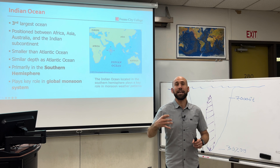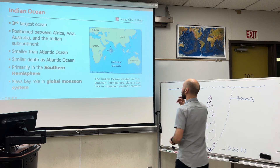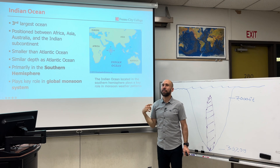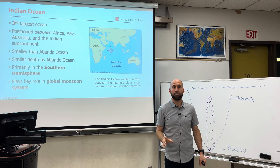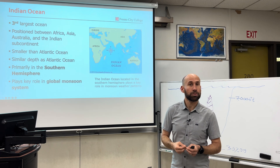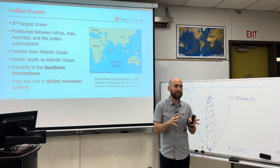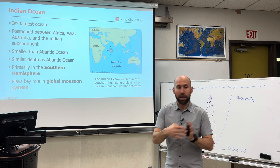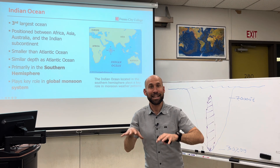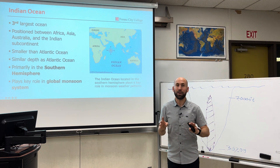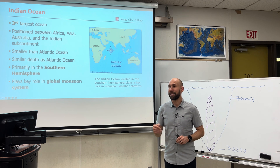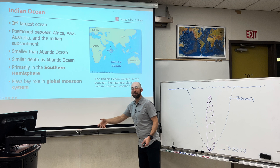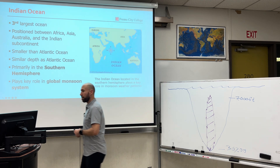Third biggest ocean in line is the Indian Ocean, located completely in the Southern Hemisphere — south of Asia, between Africa and Australia. Smaller than the Atlantic but of similar depths, and wildly important for specific weather patterns known as monsoons, where by season you have a reversal of wind direction because of the effects of land and sea. This has to do with the heat capacity of water and the differential heat capacities of land and sea. This global monsoon season has effects on marine fisheries, primary productivity, and supporting marine ecosystems.